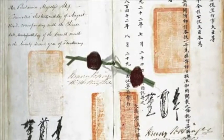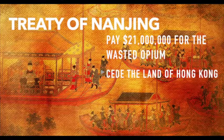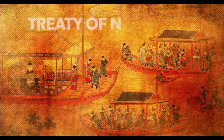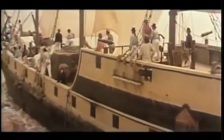After losing the First Opium War in 1842, the Qing Dynasty was forced to sign the Treaty of Nanjing, which required the Qing Dynasty to pay $21 million in reparations for the destroyed opium, cede the land of Hong Kong, provide full amnesty to those who aided the British, and open the ports of Canton, Amoy, Fuzhou, Ningpo, and Shanghai to trade under agreed tariffs. The end of the First Opium War announced the end of traditional China, as the British Empire influenced the Qing Dynasty with their policies. The Qing Dynasty became more open to foreign trade but began accumulating deficits due to the huge monetary reimbursement given to the British Empire.